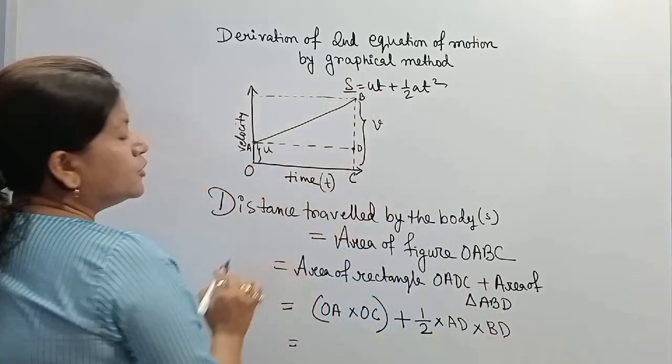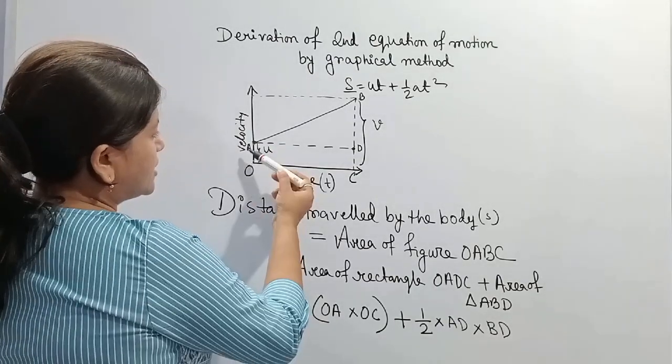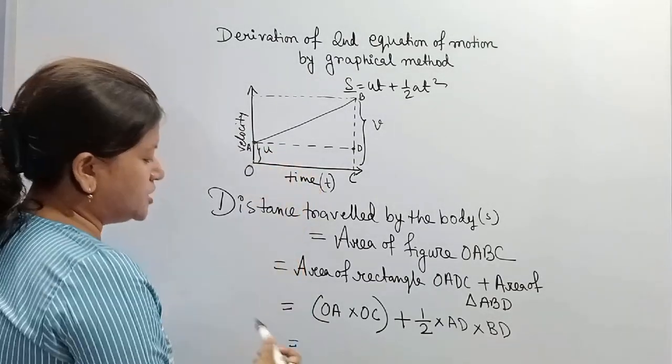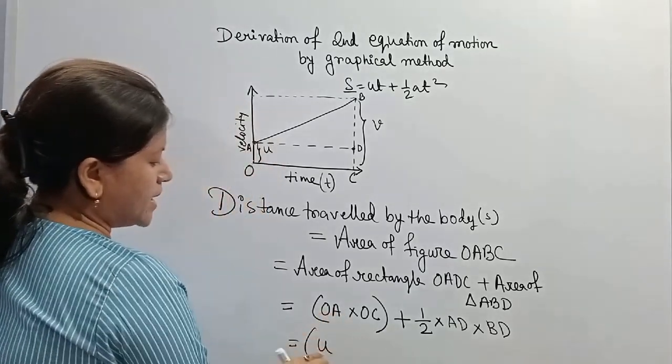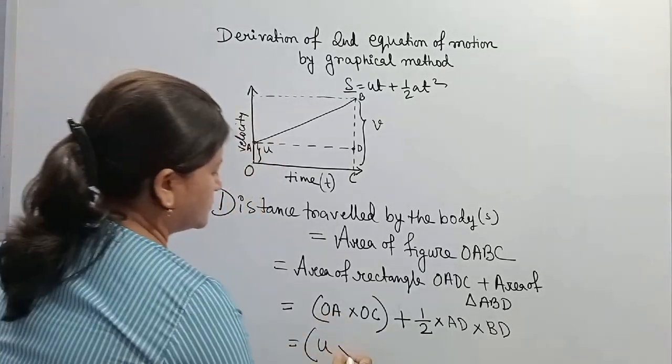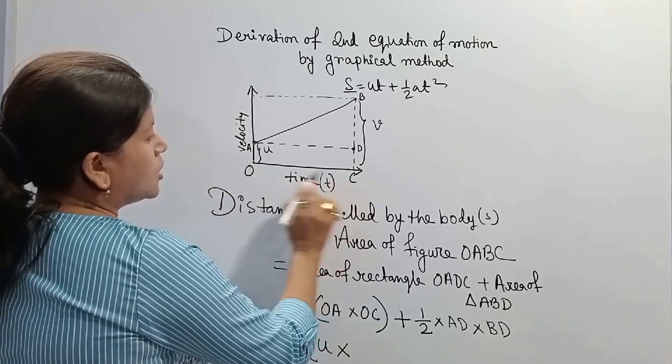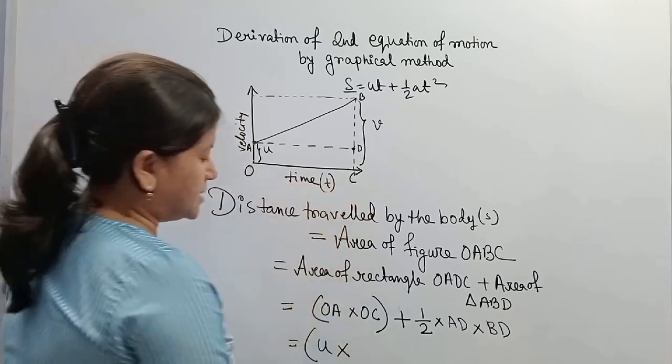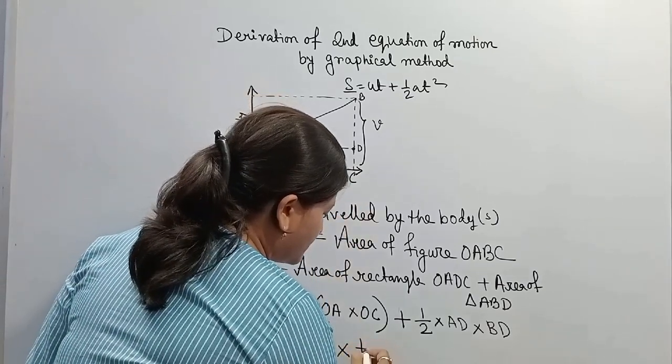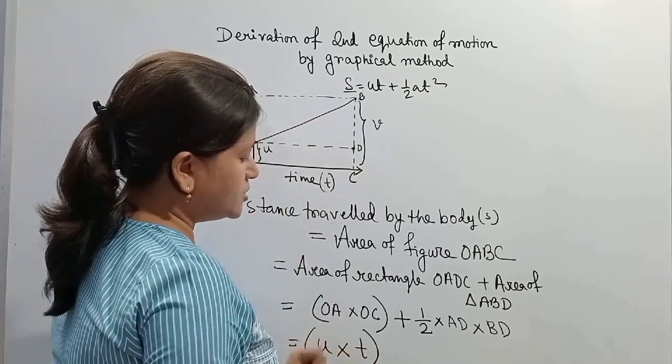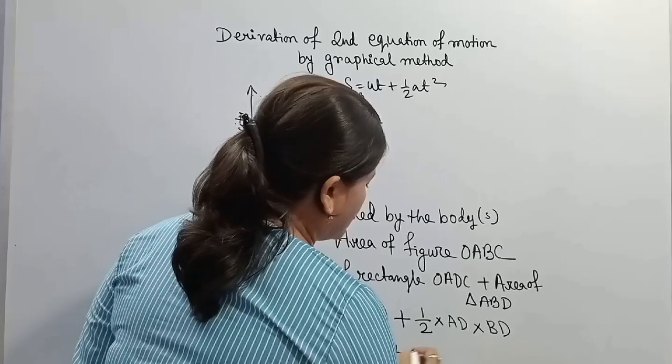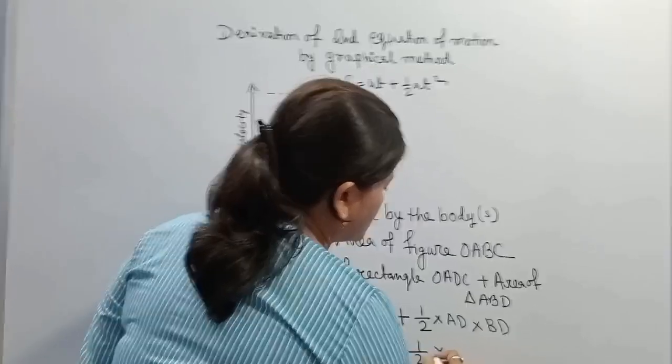From this graph we can see that OA equals u, the initial velocity. So here we replace OA by u. And OC represents time t. So in place of OC I write t, plus half into AD.